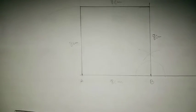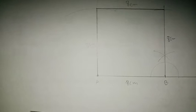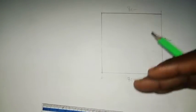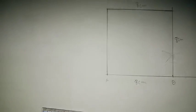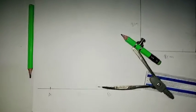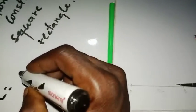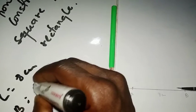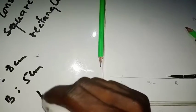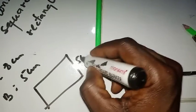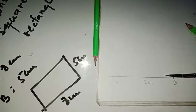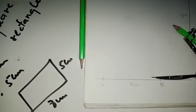Now let's see how to construct a rectangle. It follows a similar approach, but the difference is that two opposite sides are equal. We are going to construct a rectangle with a length of eight centimeters and a breadth of five centimeters. So the longer sides are eight centimeters and the shorter sides are five centimeters.